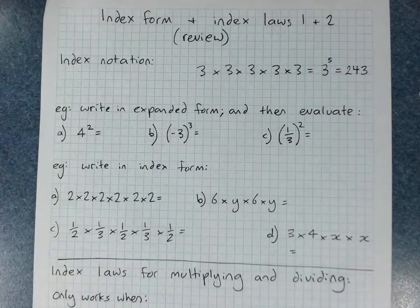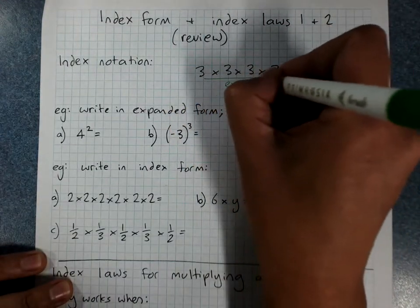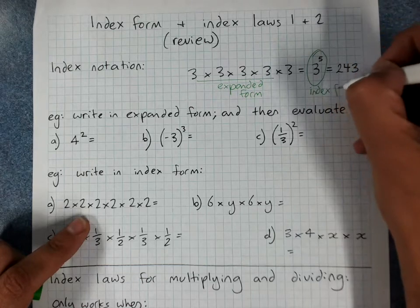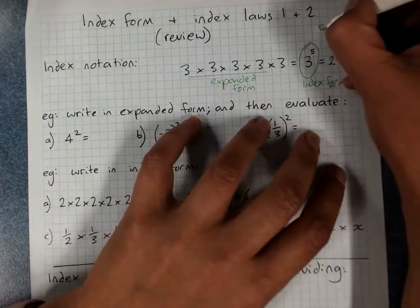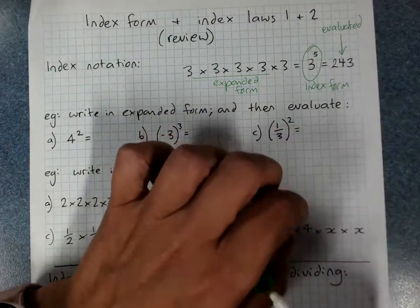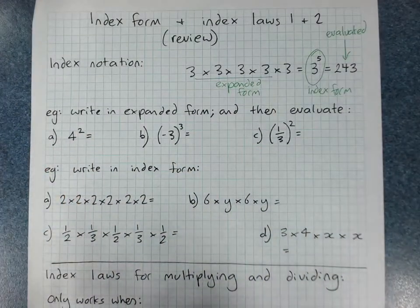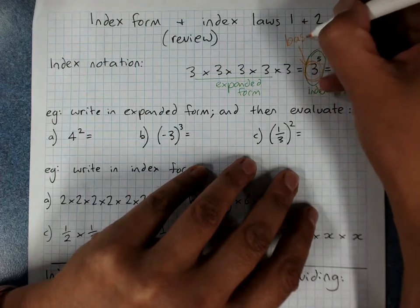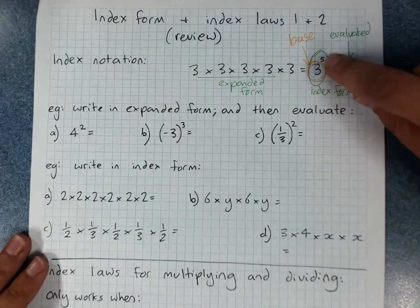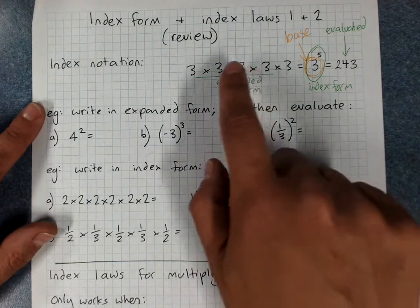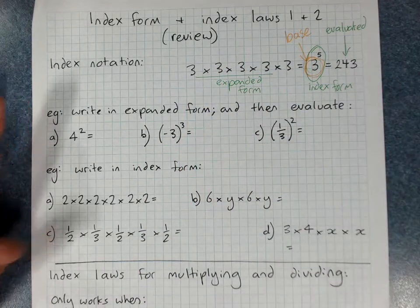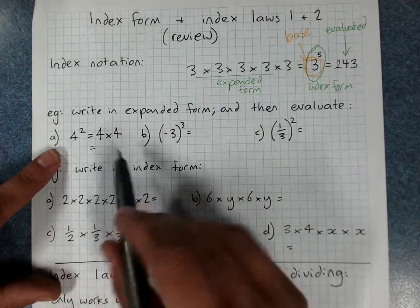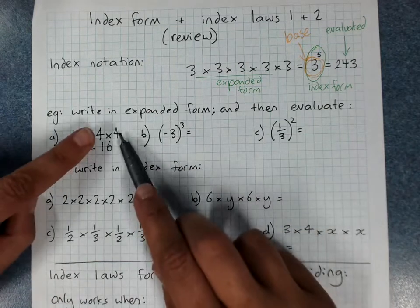This is expanded form. This is index form, and this is evaluated — the number answer, or numeral. The base number is the big number or letter at the bottom that's getting multiplied together. The index, power, or exponent is the small number. When asked to write in expanded form and evaluate: 4 squared means 4 × 4, which equals 16.